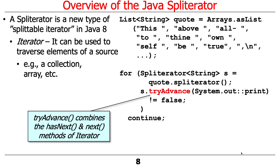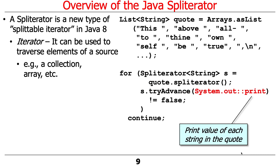Then we walk through the tryAdvance method. tryAdvance is basically a combination of hasNext and next. If you recall the iterator you implemented for assignment 1b, it had two methods — one to check whether you were done and one to get the result. tryAdvance combines both of those. It returns true if it managed to get an item and false if not. If it returns true, it returns the result through the parameter passed to it. In this case, we print the output by passing in the print method reference of the System.out object, so the spliterator will just print the results.